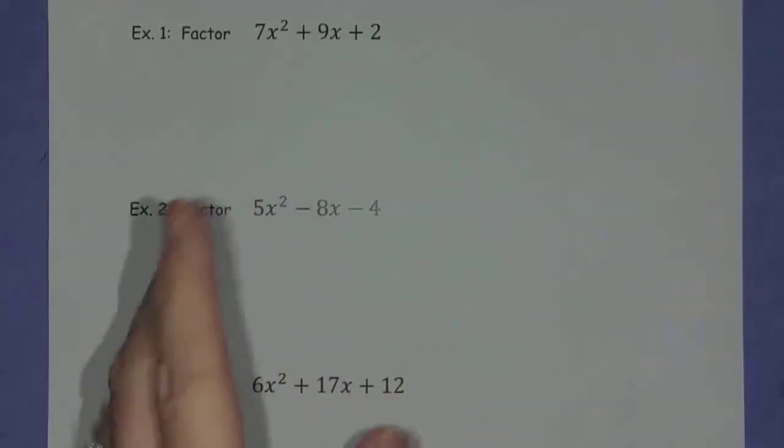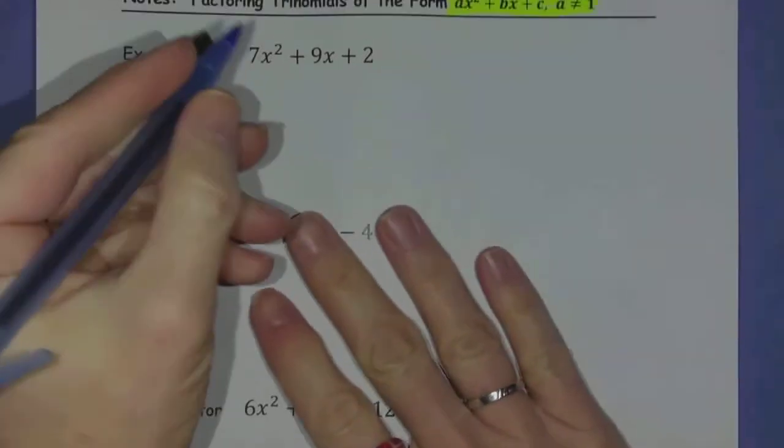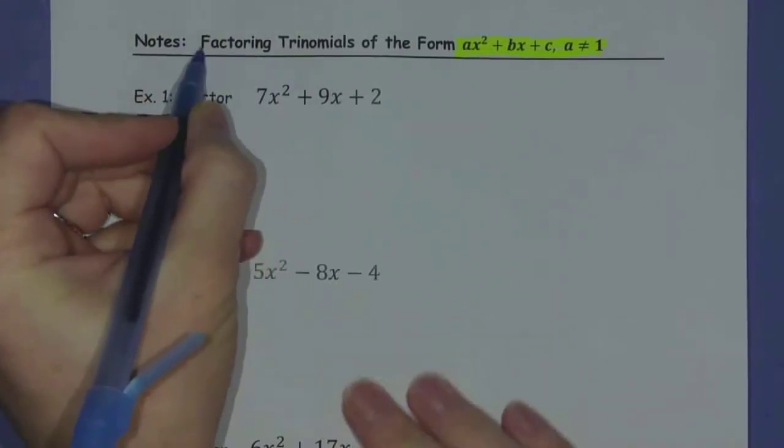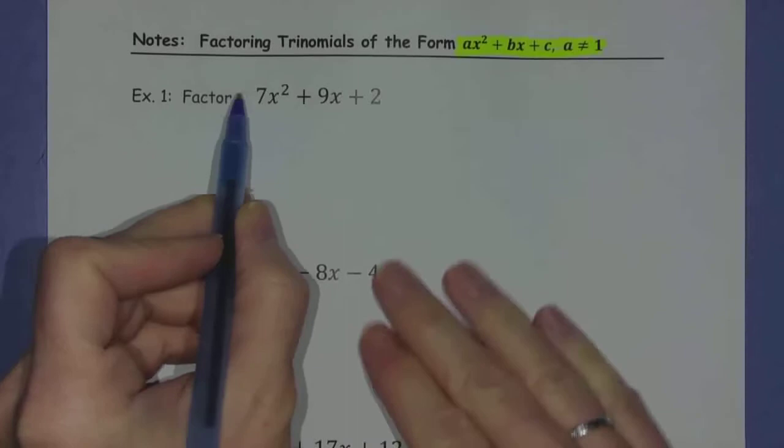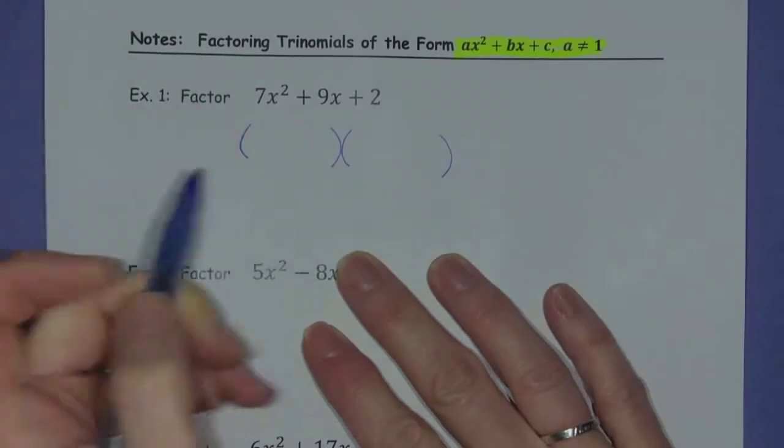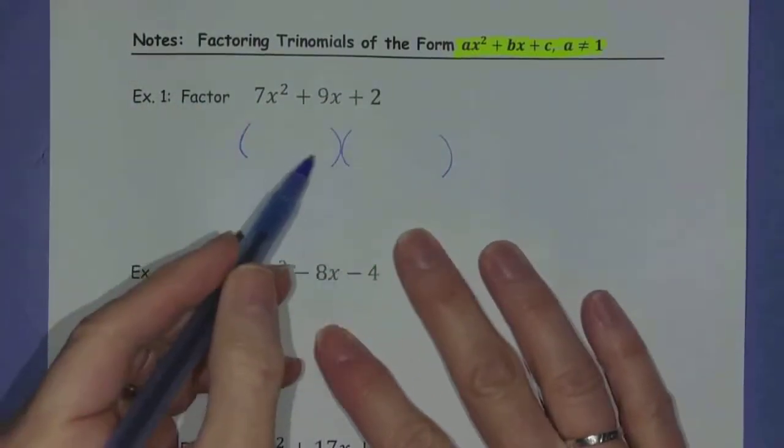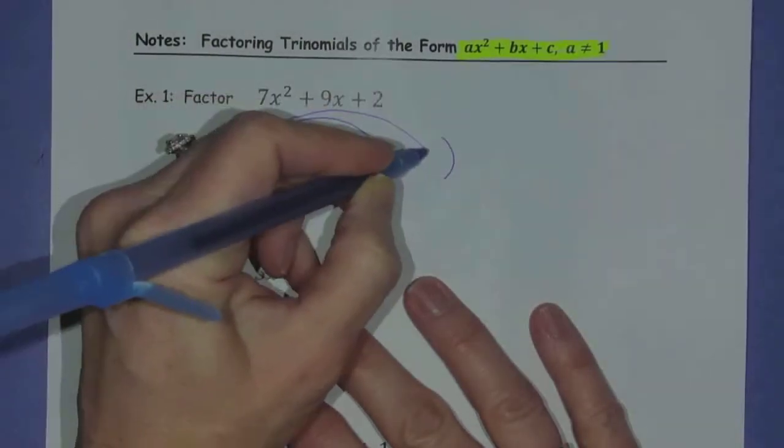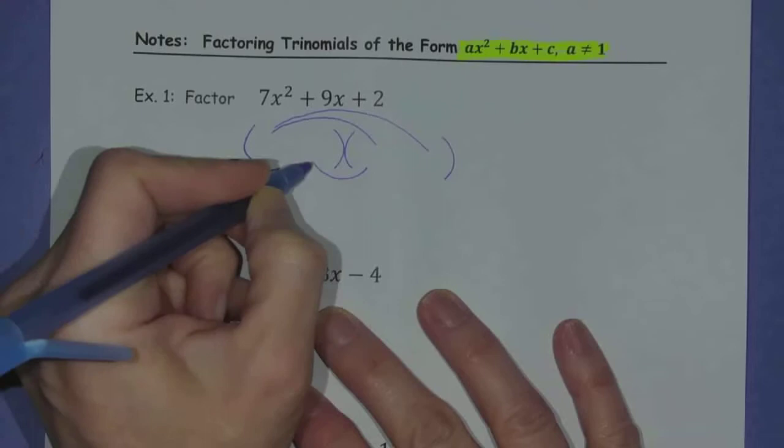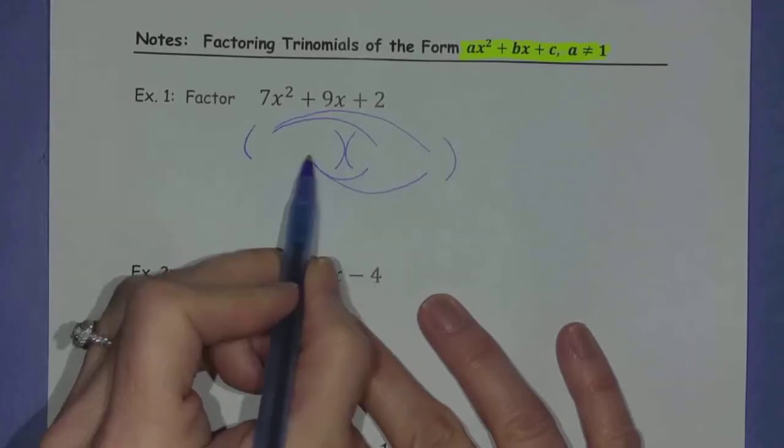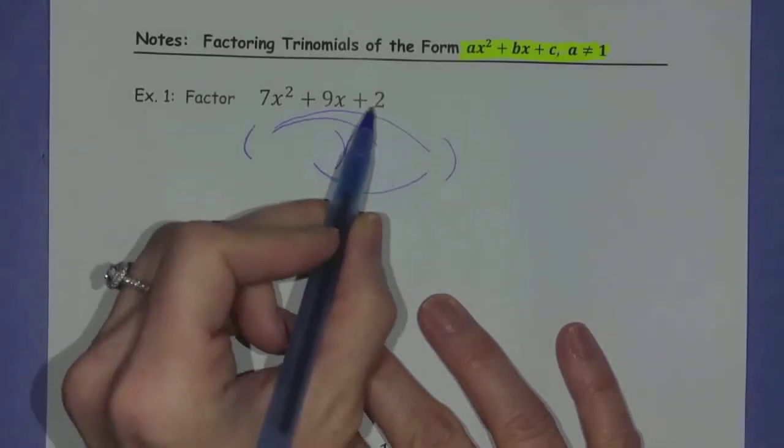The first way is really just the way I prefer, which is just thinking about the fact that factoring means to express a polynomial as the product of other polynomials and to sort of unwrap multiplication and figure out what we would put in these four positions so that when I multiply these polynomials together, I get this.